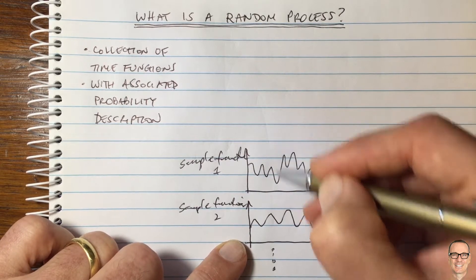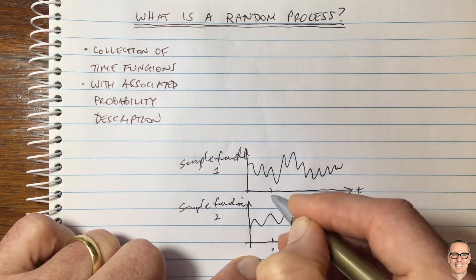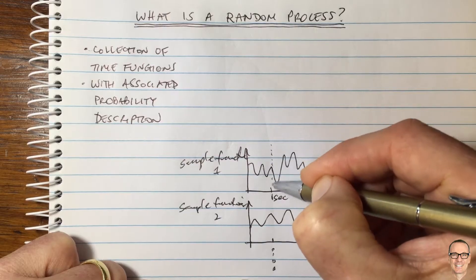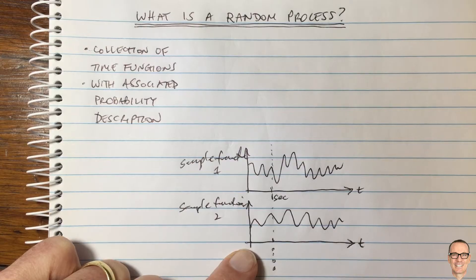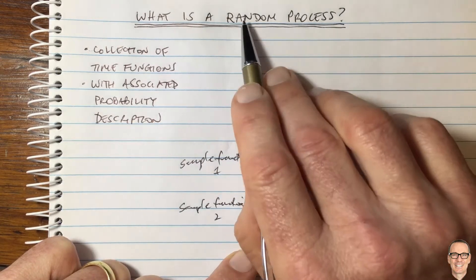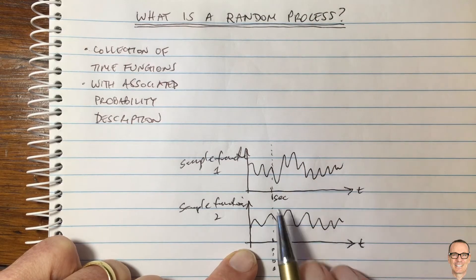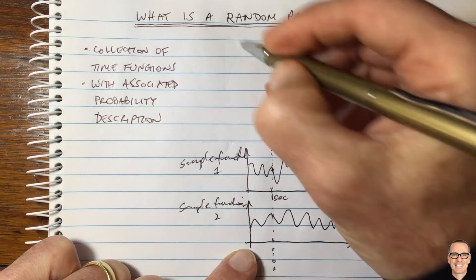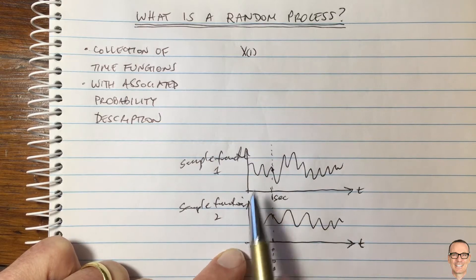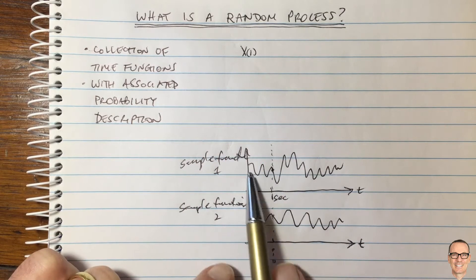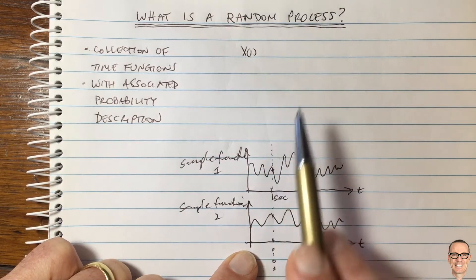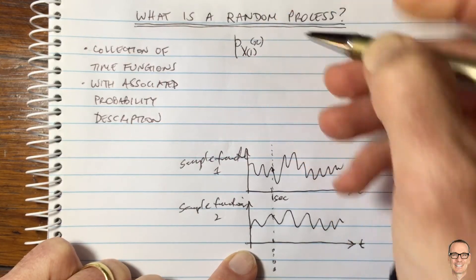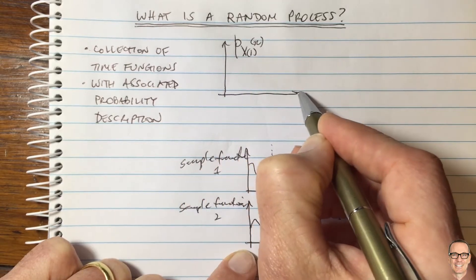Let's look at a particular time instance — one second, for example. What is this associated probability description? Well, for a mobile phone call we know that the amplitude of the signal has a Rayleigh distribution. At time one second, that value is a random variable — it's the random variable x1. The random process is labeled x, and at time one it is random and specified by random variable x1, which has a probability density function. For mobile communications, that PDF is a Rayleigh distribution.